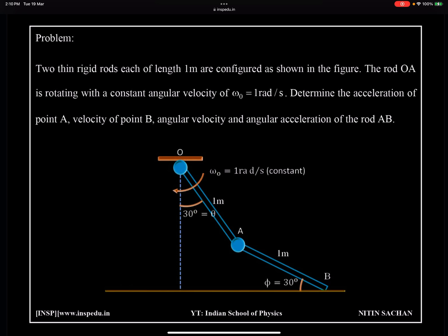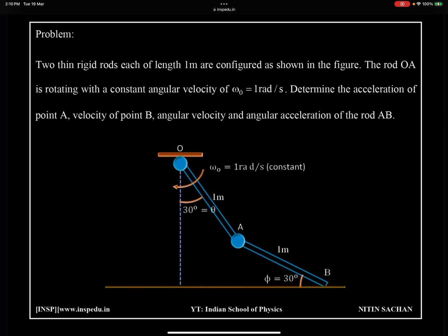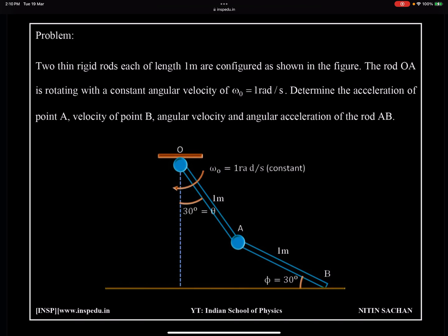Determine the acceleration of point A, velocity of point B. You can see in the diagram where these are. Next time I'll try to bring the pointer so you can see where exactly I'm talking about. But here in the diagram it's very much clear. Acceleration of point A, velocity of point B and acceleration of rod AB. So this is given to us and constant omega is given for rod OA.